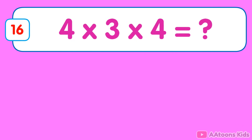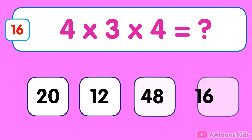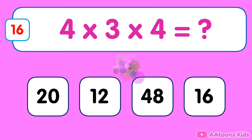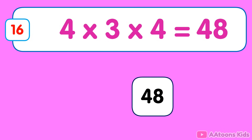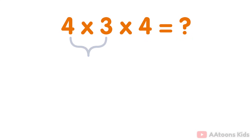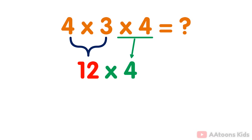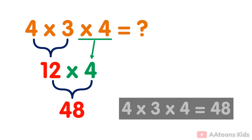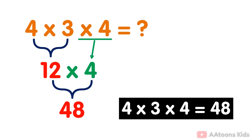4 multiplied by 3 multiplied by 4. The answer is 48. Simply multiply the numbers 4 and 3 which equals 12. Then you multiply the result 12 by 4. You will get 48. Therefore the answer to 4 multiplied by 3 multiplied by 4 is 48.